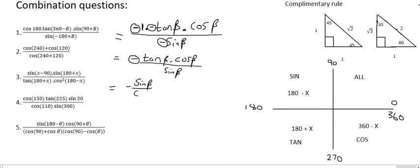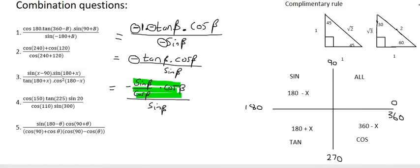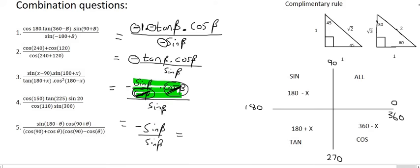So we have sin over cos times cos beta at the top, and then sin beta at the bottom. Let's focus on the top part: that cos beta at the bottom will cancel with the cos beta at the top. And so we end up with minus sin beta over sin beta. Those cancel, and your final answer is minus 1.